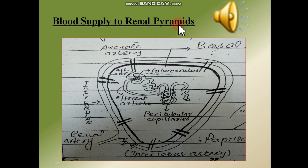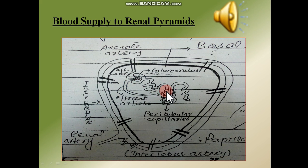The blood supply to the renal pyramids starts with the renal artery, which divides into interlobular arteries, then arcuate arteries, and then reaches the glomerulus. The afferent arterioles carry blood toward the glomerulus and efferent arterioles carry back deoxygenated blood. Peritubular capillaries surround the loop of Henle and are involved in the reabsorption of useful materials such as glucose, ions, and water. After filtration, these vessels combine to form venules and then veins.